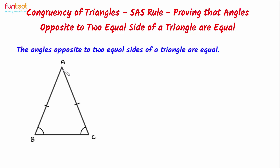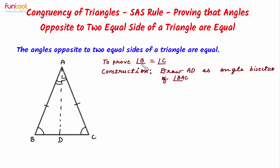So, for the application of the SAS rule here, AD should be our angle bisector. So, I am drawing AD now as the angle bisector of angle BAC. This will be point D, and these two angles will be equal. So, here we have to prove that angle B is equal to angle C, and our construction is: draw AD as the angle bisector of angle BAC.